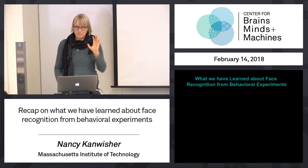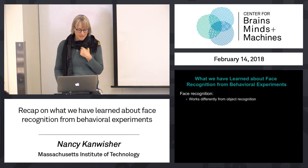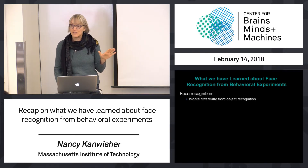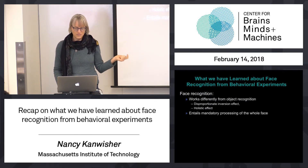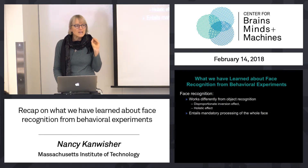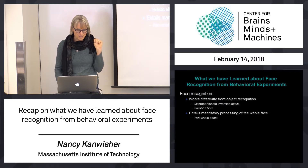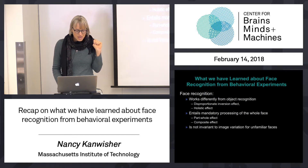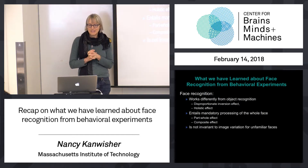So summing up, what we have learned from just this small sampling of behavioral experiments — what we've learned about face recognition is that it seems to work differently from object recognition in the disproportionate inversion effect, in the holisticness of face perception, both the part-whole effect and the inversion effect. One of the ways it seems different from recognition of objects is this kind of mandatory processing of the whole. We also see that it's not perfectly invariant to image variation, at least for unfamiliar faces.